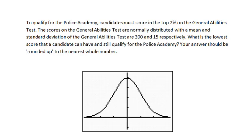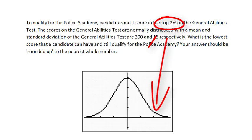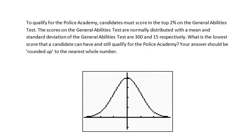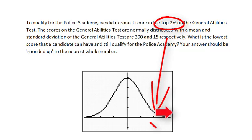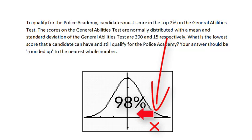After deciding that this is a percentile problem, the next hurdle to overcome is to decide whether the percent given represents a percent which is to the right or to the left of the number we are asked to find. In this problem, we are told that the candidates must score in the top 2%. Therefore, in this problem, the 2% would be to the right of the score that we are trying to find, and 98% would be to the left of the score we are trying to find.